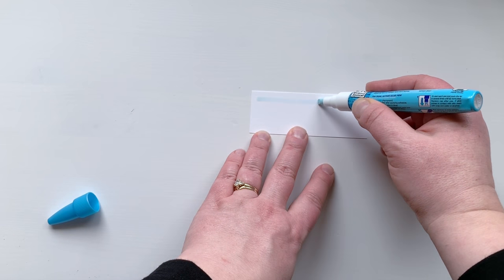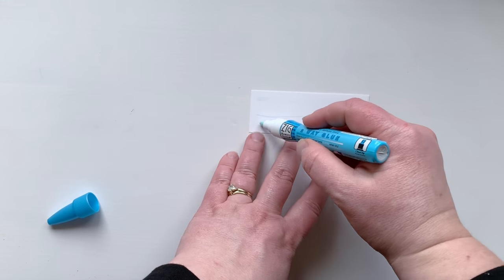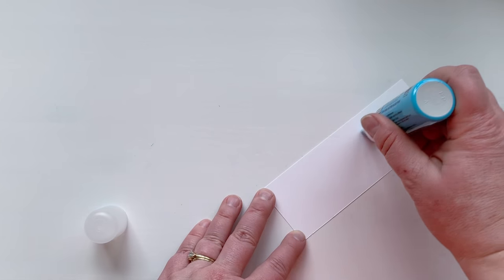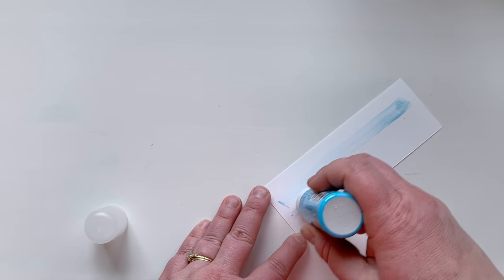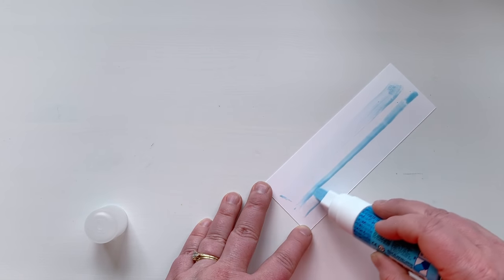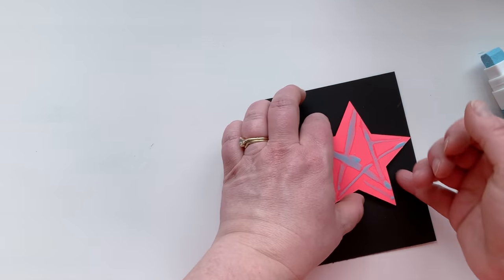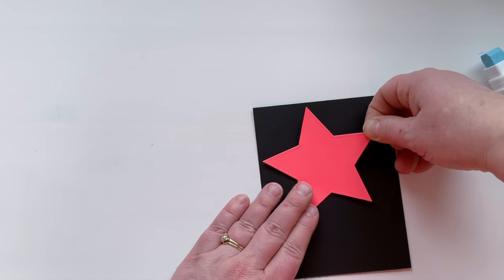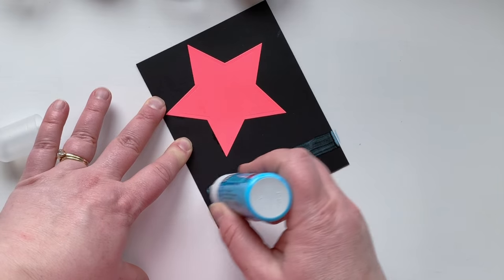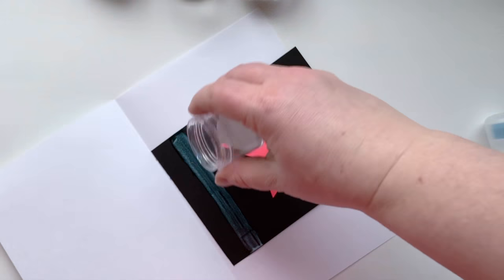The chisel tip you can turn on its side to get a thinner line of glue and also use the tip or the corner to get a dot of glue. You can do the same with this jumbo tip. I like the jumbo tip for large pieces that also have pointy corners so you can turn it on its side and adhere those easily.